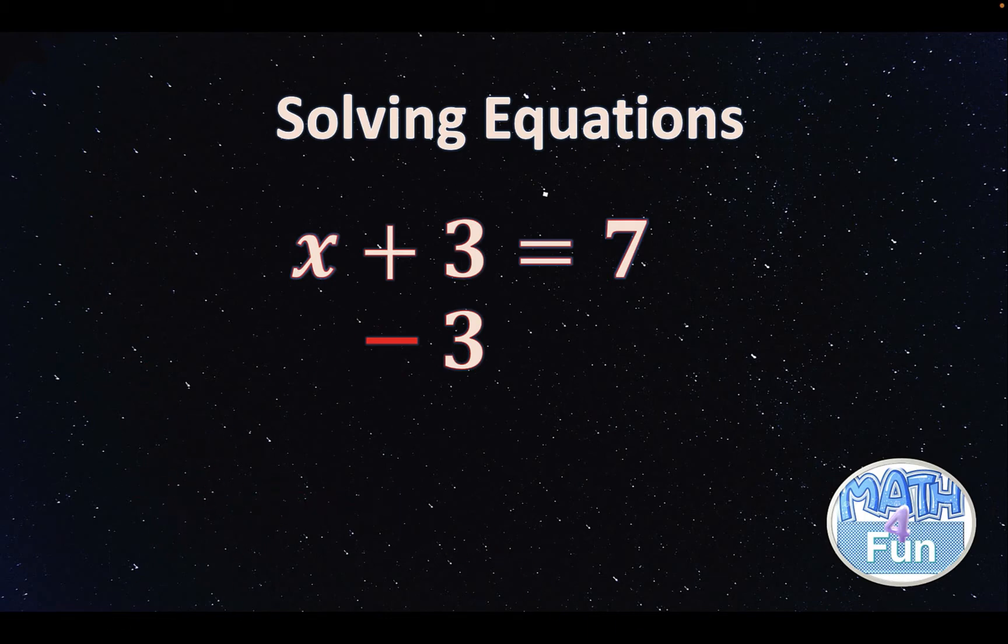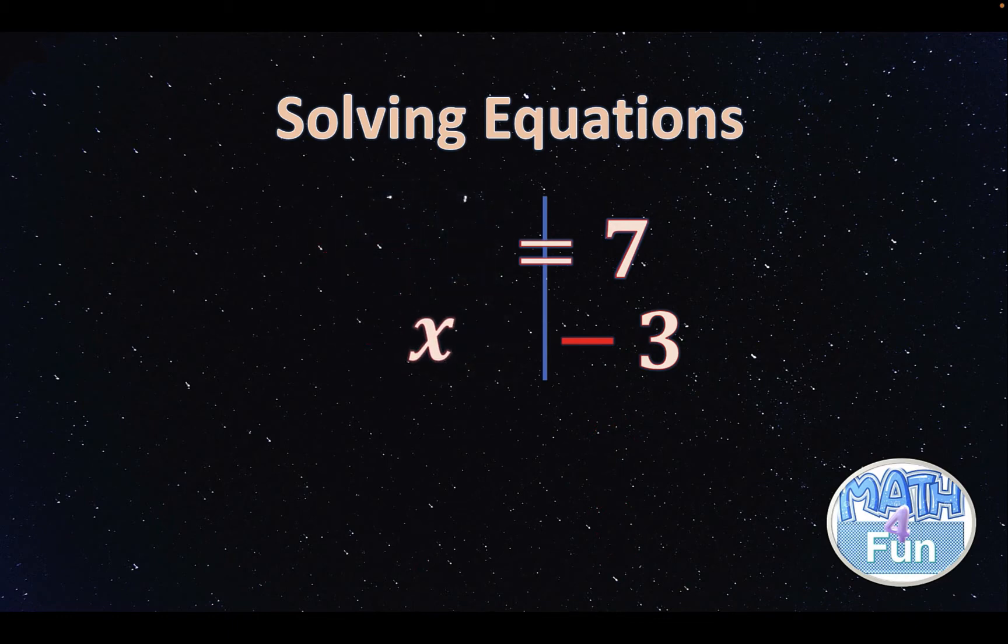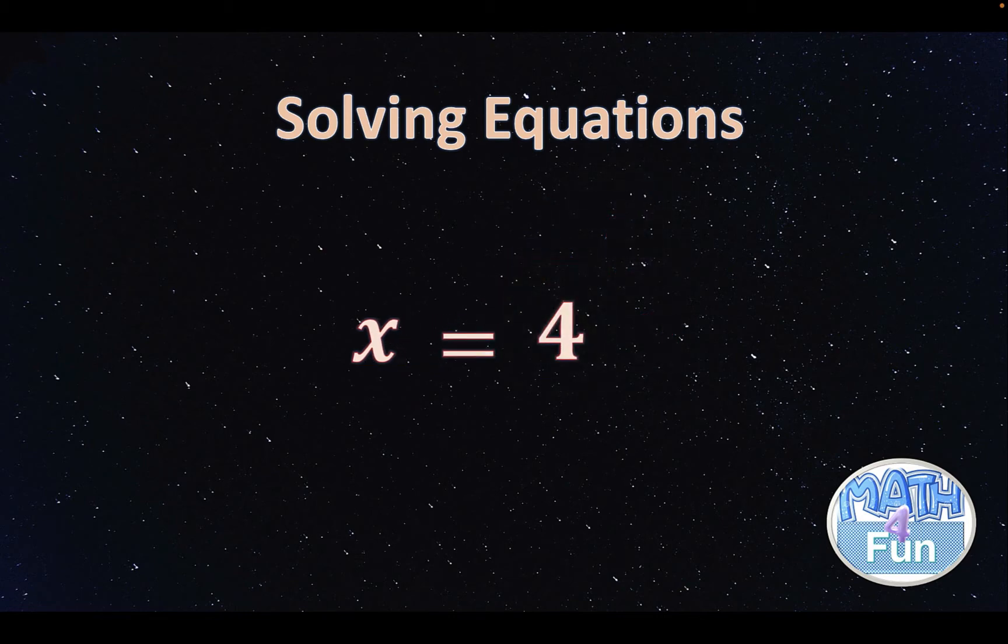We need to add minus 3 on the other side also, because this is an equation. To keep the equal sign, we need to keep both sides of the equation the same. Now we say plus 3 minus 3 equals to 0, so it will go. Then you're left with x, and on the right side we have 7 minus 3, which is equal to 4. So now we got x equal to 4.